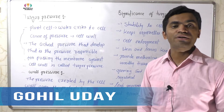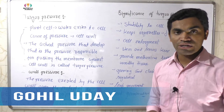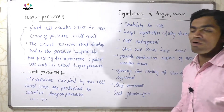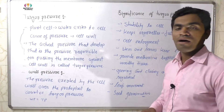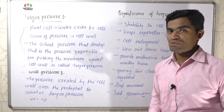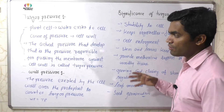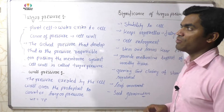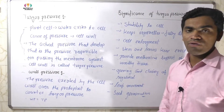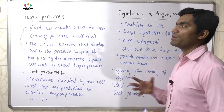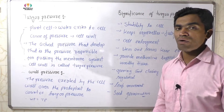Welcome to Manojama Academy. Today we have to study about turgor pressure and wall pressure. Both pressures are useful for the study of plasmolysis. Before studying plasmolysis, we have to know about turgor pressure and wall pressure. What is turgor pressure? When a plant cell is put in water...